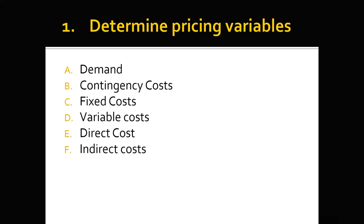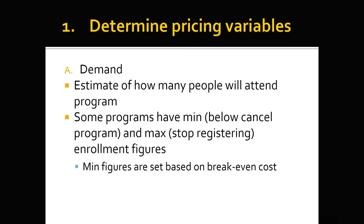The pricing variables are demand, contingency costs, fixed and variable costs, and direct and indirect costs — all the costs that go into an organization. Demand is how many people are actually going to attend your program or event. Some programs may have a minimum enrollment — a below-cancel threshold — and a maximum. Often this is set based on break-even cost; you want enough people to attend so you can break even.